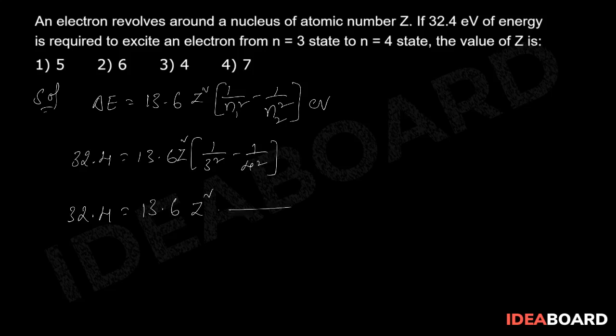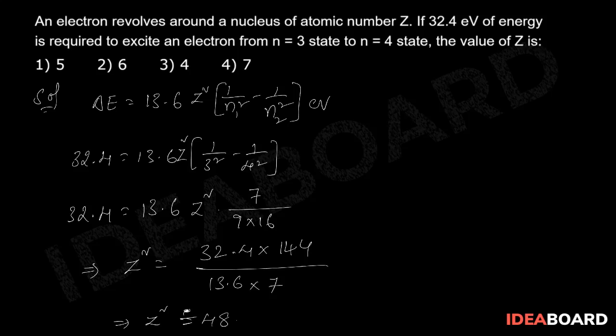Z² = (32.4 × 144) / (13.6 × 7). From this, Z² value equals 48.96, therefore Z is approximately equal to 7. Therefore correct option is fourth one.